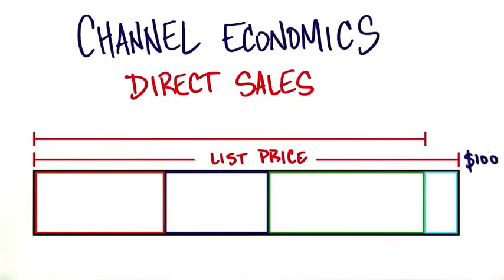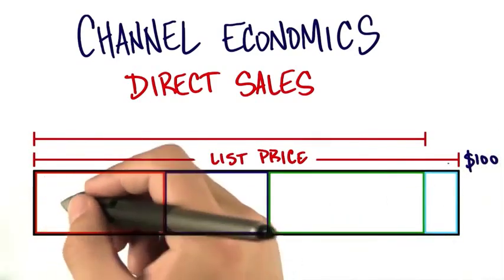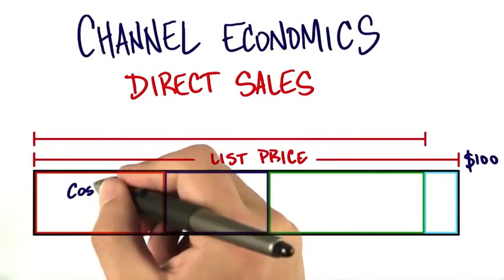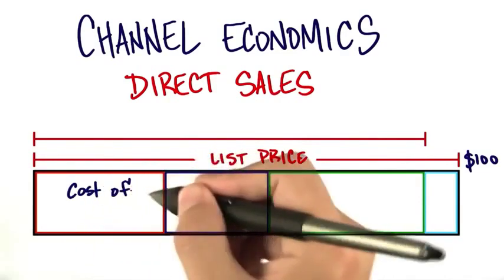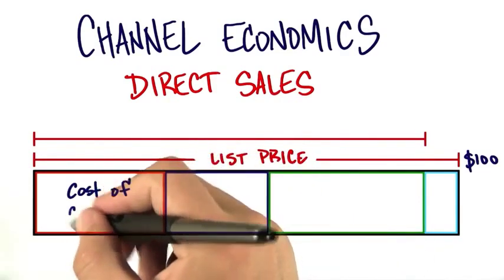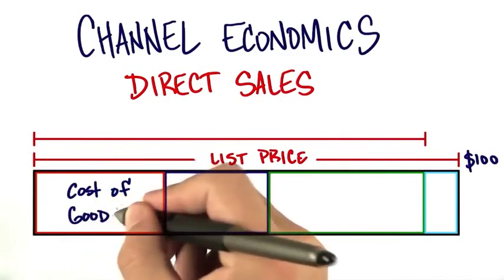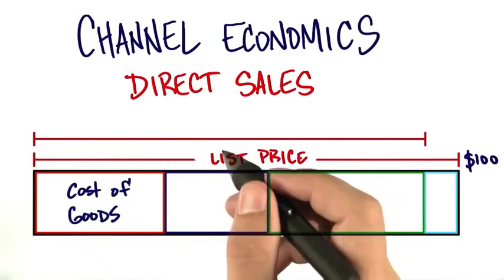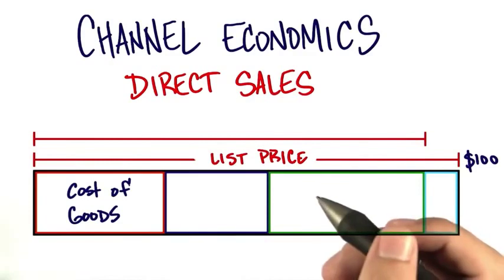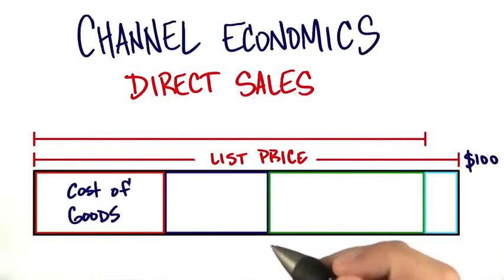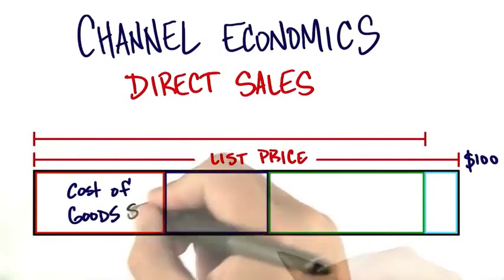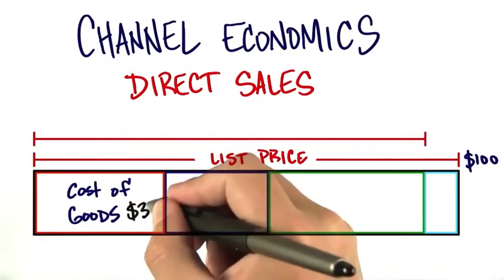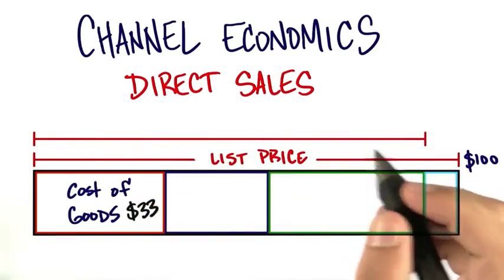One of the first questions in thinking about how to come up with this $100 list price is to understand how much did it actually cost me to manufacture a product. Now, in the web, it might be the cost of my engineers. But in a physical product, it might be the costed bill of materials coming out of my factory. Let's assume for the sake of discussion that that was $33 — $33 to build my product.